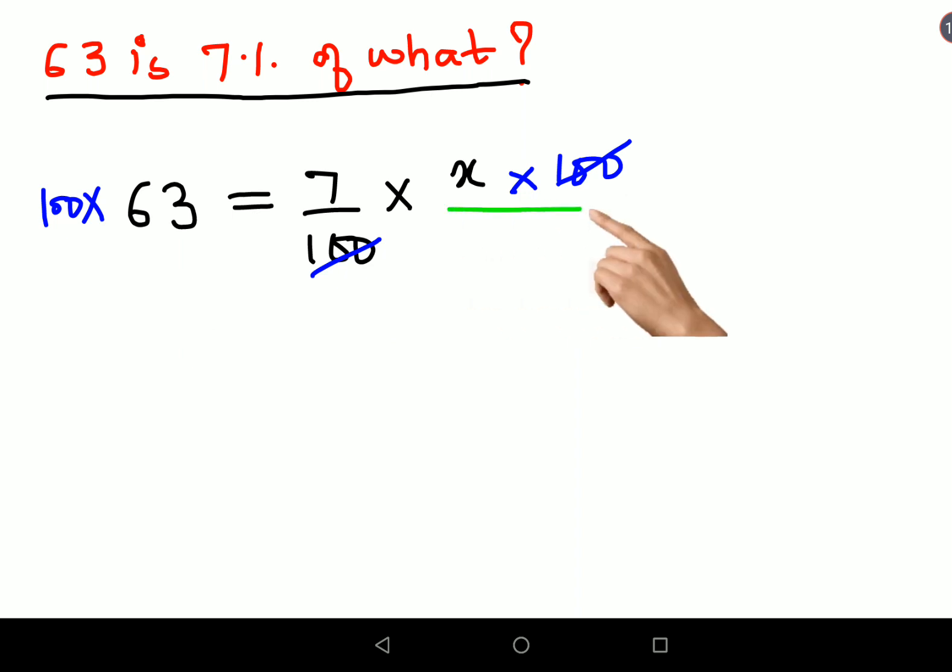Now there is also a 7, so let's divide it by 7 on both sides. This 7 and this 7 also gets cancelled. Now here on your LHS, I can say 7 ones are 7, nines are 63, so 9 into 100 will get you 900. And that, my dear friends, will be the value of x.